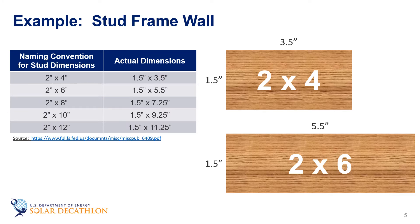The difference between the conventional names for the sizes of studs and their actual dimensions is important for calculating the R value of the wall because these measurements will be inputs for calculations later in this episode.